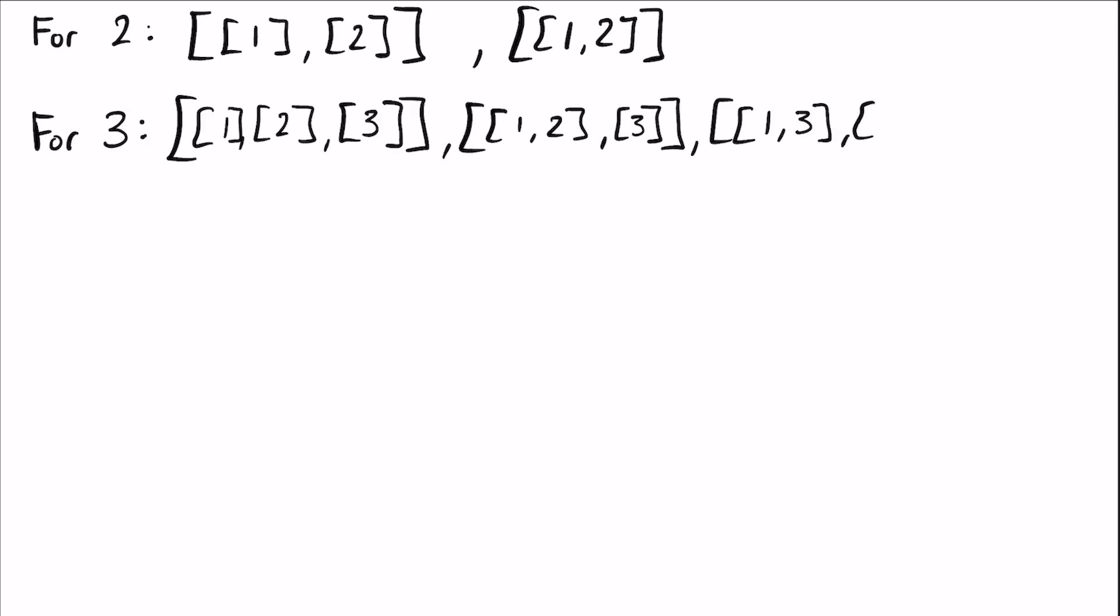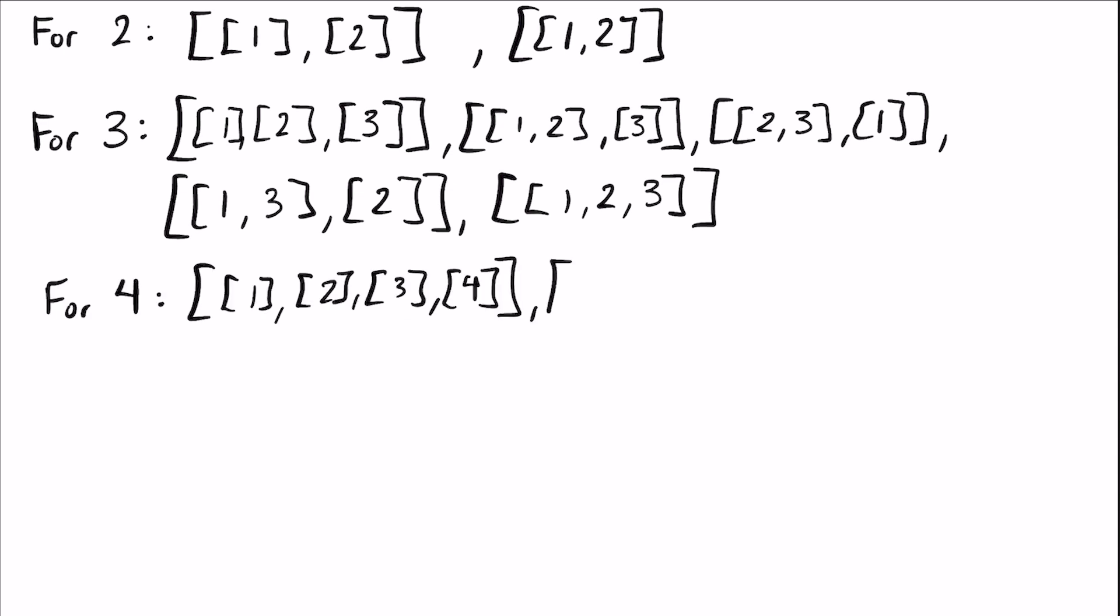Now there are multiple combinations that a given number of drones can take to fly with one another. For two drones, there are only two combinations, fly alone or fly together. For three drones, there are five combinations, because all three could connect to one another, or only two could connect while the third drone stays independent, or all three could simply stay independent. For four drones, there are 15 combinations, for five drones, there's close to 60 combinations, and so on and so on.